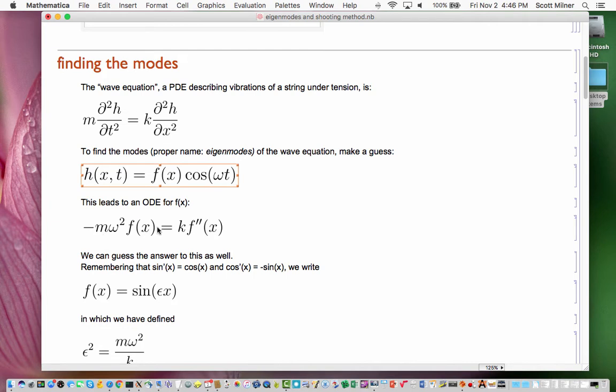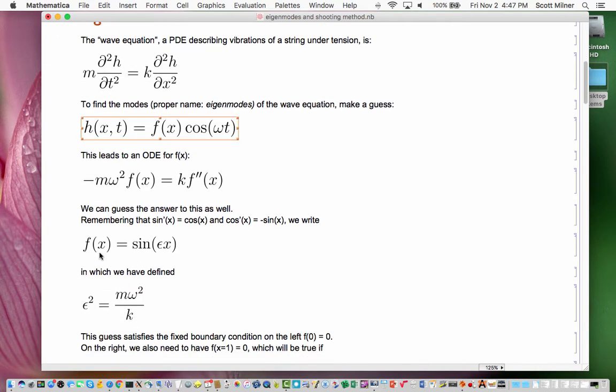So now we have this ODE for f, and we can guess an answer to that as well, again, based on sines and cosines. If you remember that the derivative of sine is cosine, and the derivative of cosine is negative sine, if you put a sine in here, you'll take two derivatives, and you'll get minus sine times the square of whatever coefficient is inside. So if I move the k over here and make this m omega squared over k, and call that thing epsilon squared, then the function sine epsilon x will solve this equation.